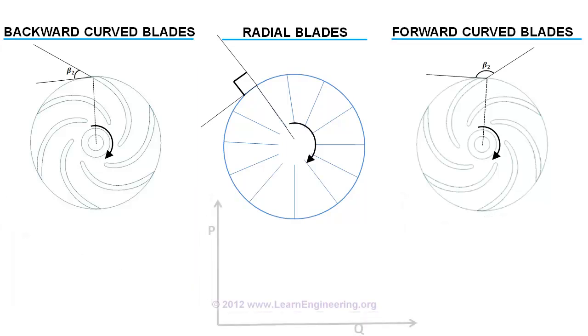For backward curved blades, as pressure head decreases with discharge, power consumption stabilizes with flow.